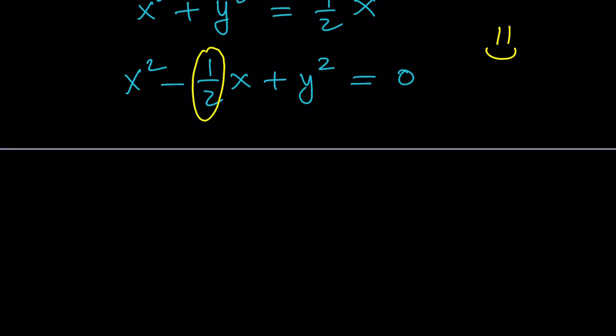You're going to take the coefficient of x and cut that in half, or in other words, divide by 2, which gives you 1 fourth. And then you square that number.